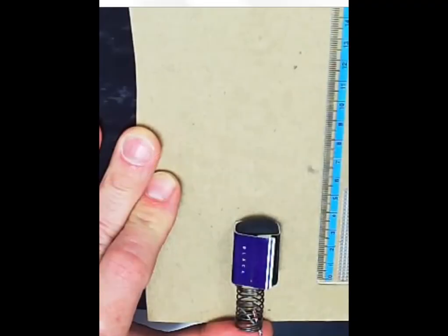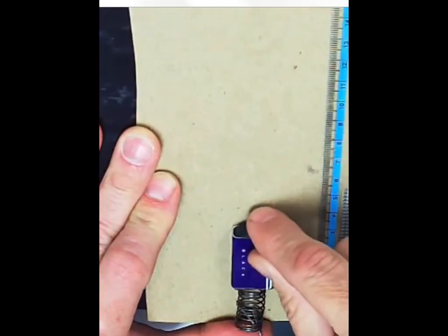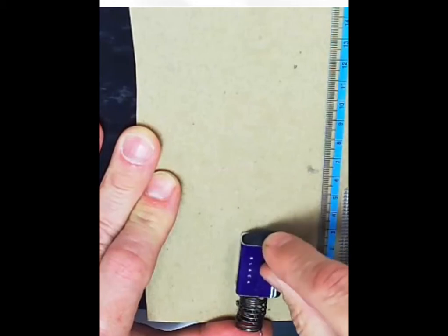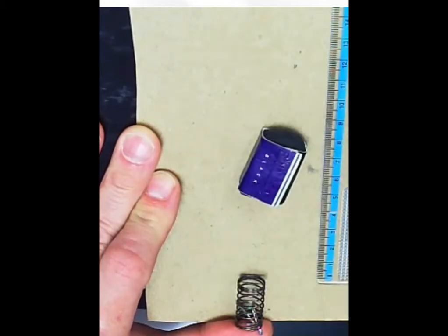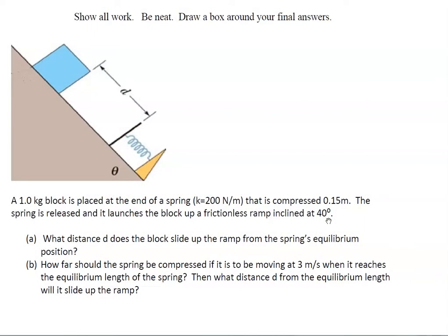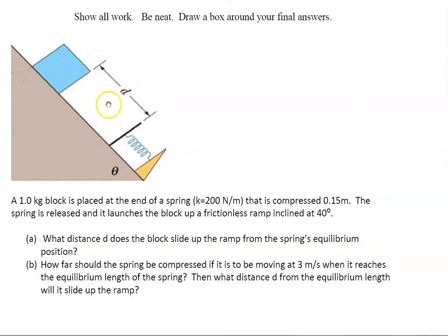Here's a simulation of the problem. Here's my block, here's my spring. I can compress the spring a certain amount and launch it. How high does it go up the ramp? The first part of the question asks what distance d does the block slide up the ramp from the spring's equilibrium position — that is, from where the spring is unstretched to where the block stops.